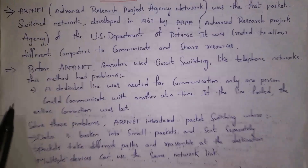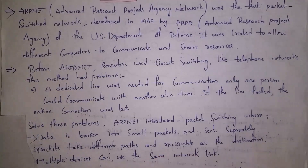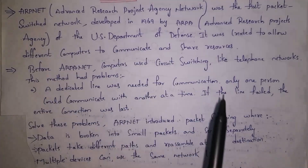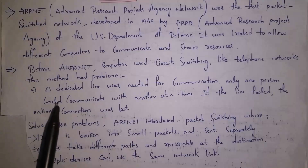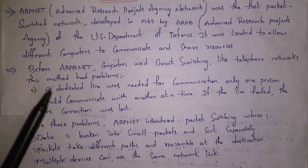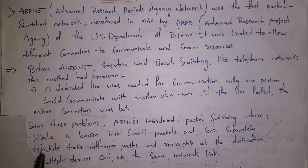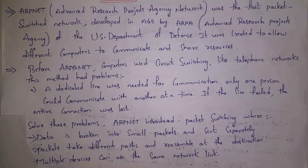This first packet switching was introduced by ARPANET in order to overcome the problems of circuit switching. Before ARPANET, computers used circuit switching like telephone networks. This method had problems: a dedicated line was needed for communication, only one person could communicate with another at a time, and if the line fails, the entire connection would be lost — for example, landline phones. To solve this problem, ARPANET introduced packet switching where data is broken into small packets and sent separately, packets take different paths and reassemble at the destination, and multiple devices can use the same network.